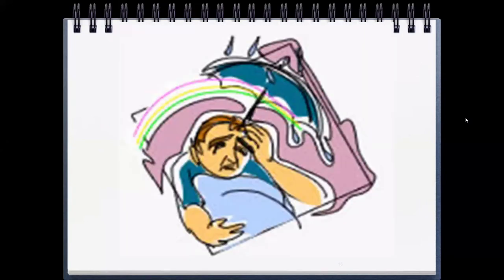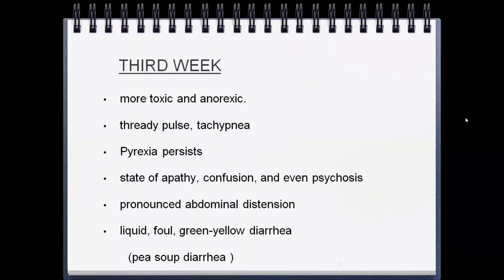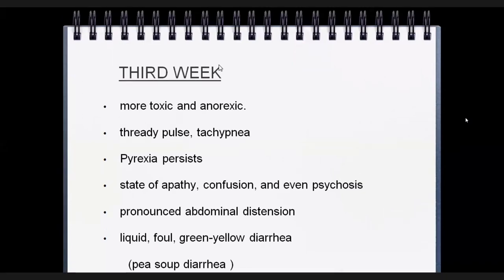In the third week, in a patient receiving no treatment, the condition worsens significantly. The patient is more toxic and anorexic. There is a thready pulse and tachypnea — the child is going into shock. High fever persists. The patient becomes confused, and may experience psychosis — reporting that someone is coming to hit them or that insects are running around. This indicates CNS involvement. Pronounced abdominal distension is also present.